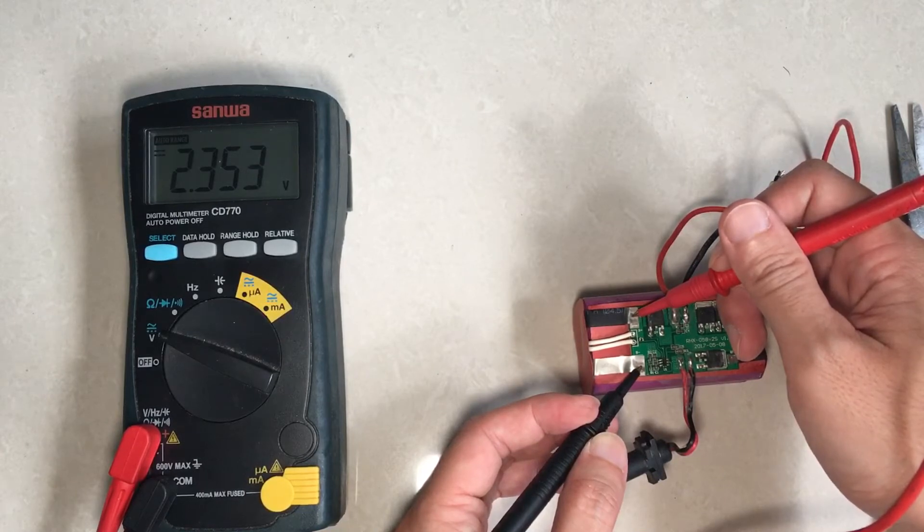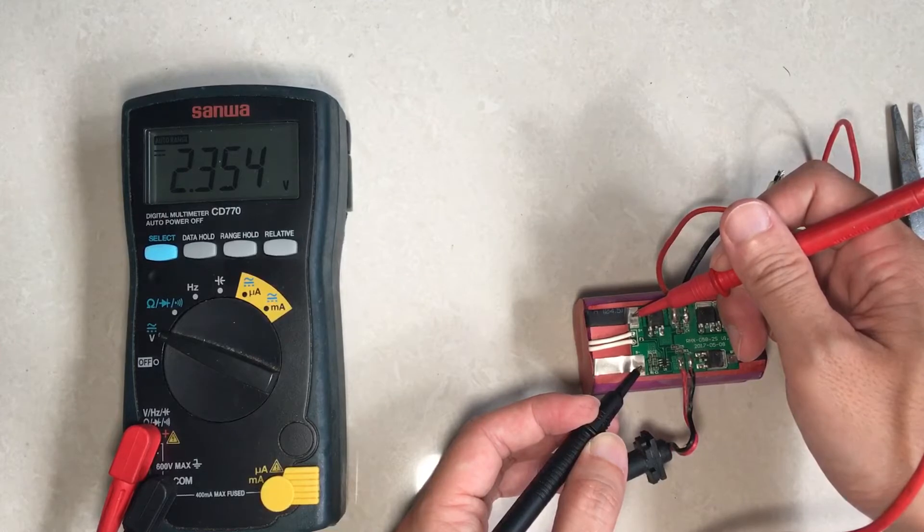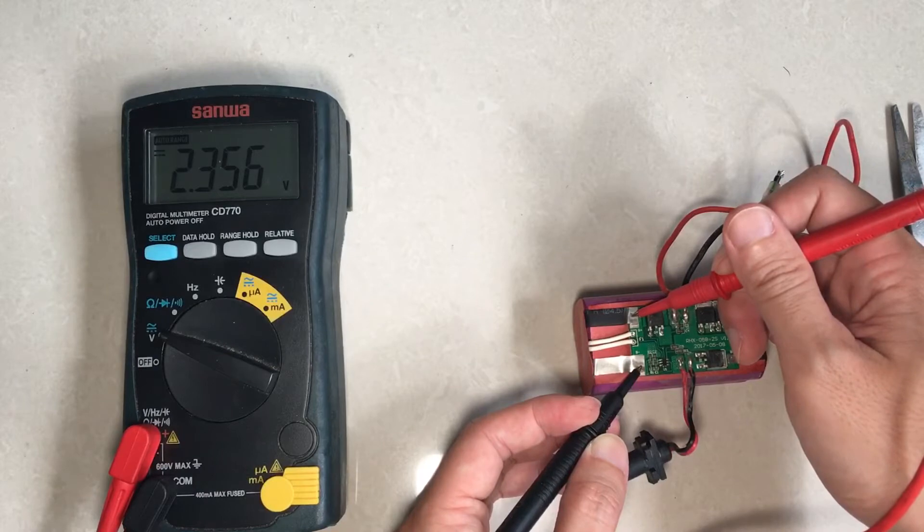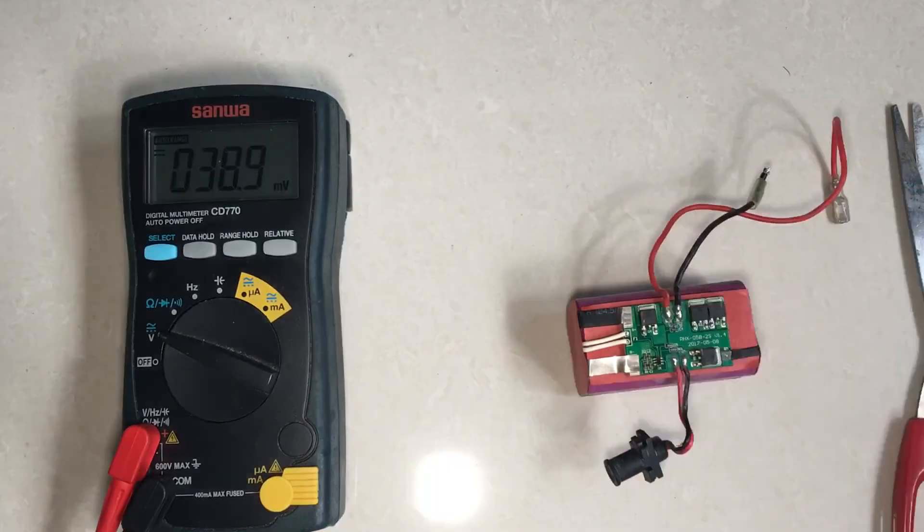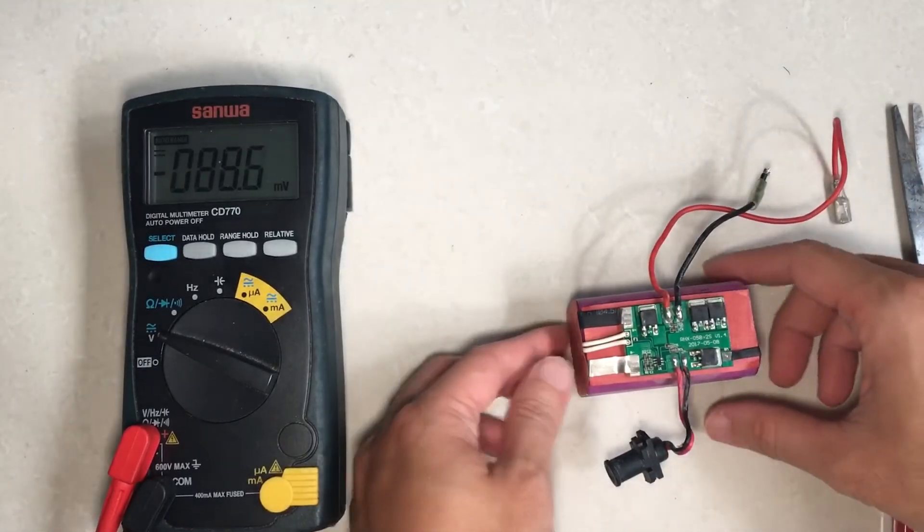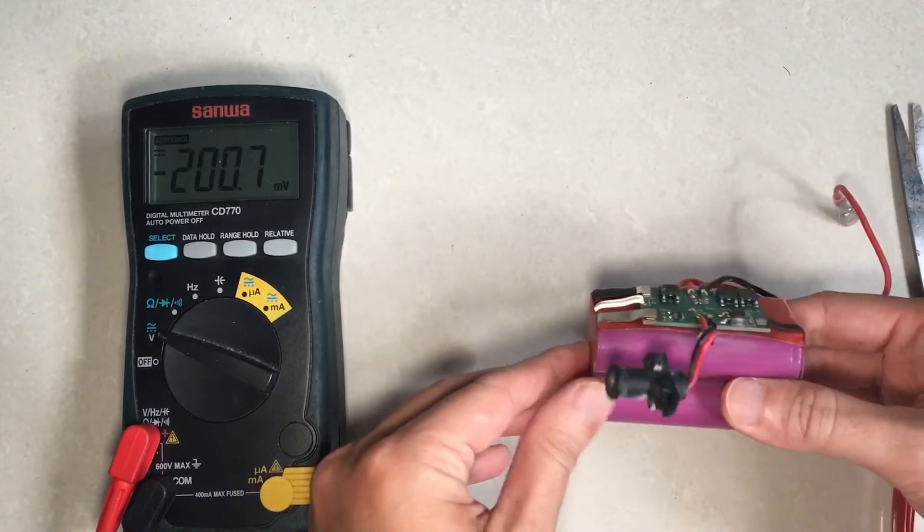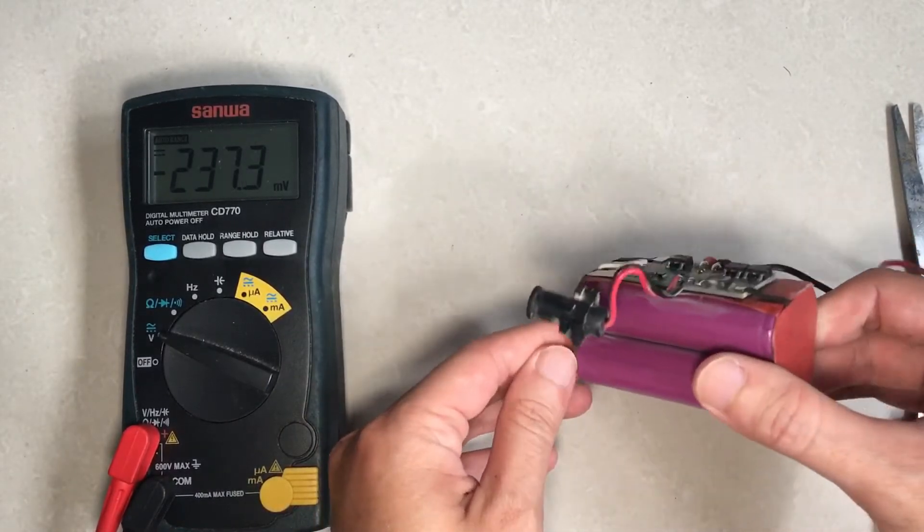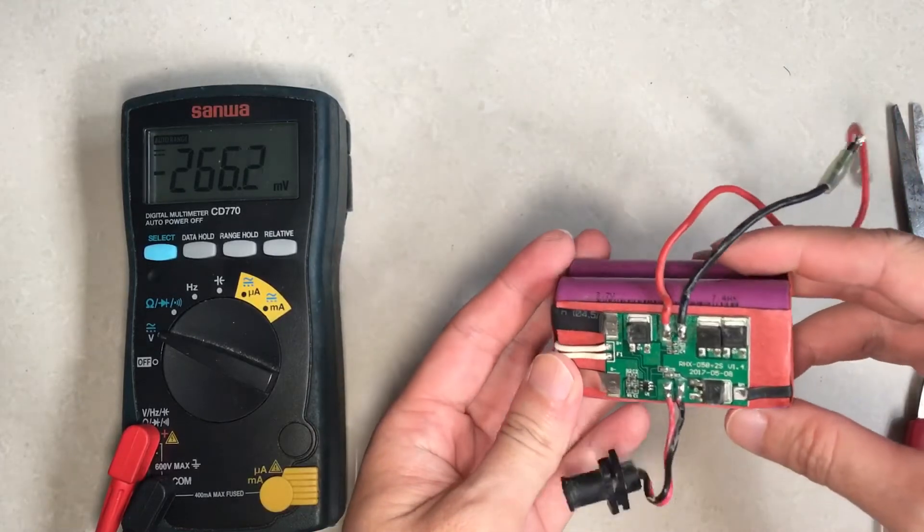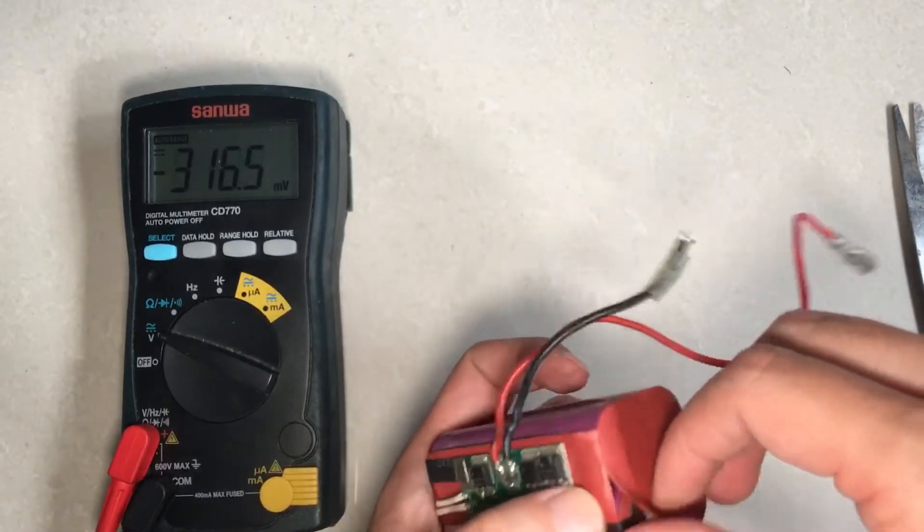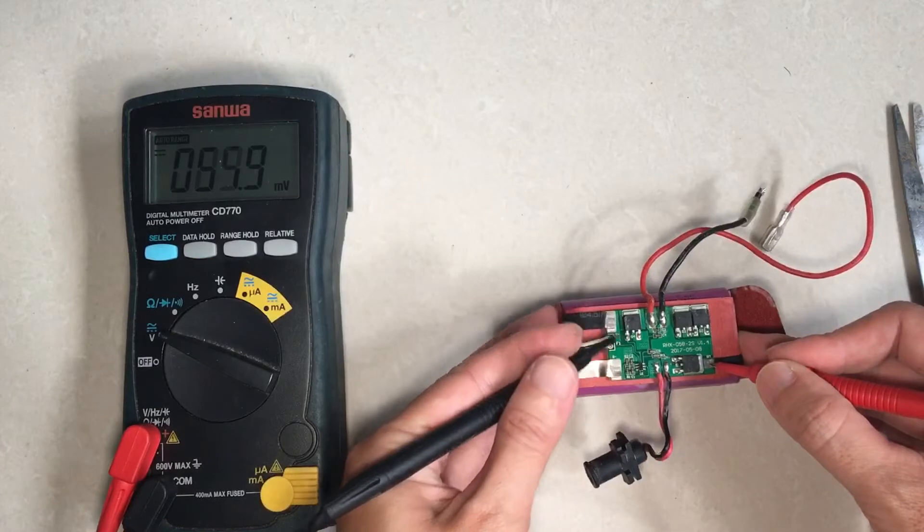But this is way lower than what we are expecting because by right it should be around 7.4 volts, so this doesn't look good actually. So let's dismantle the battery even more, hopefully we can access it without damaging it.